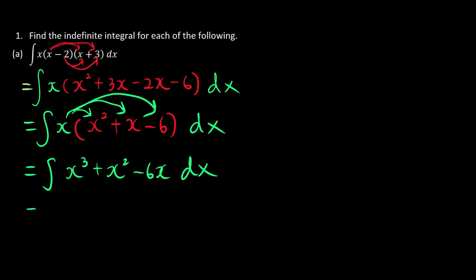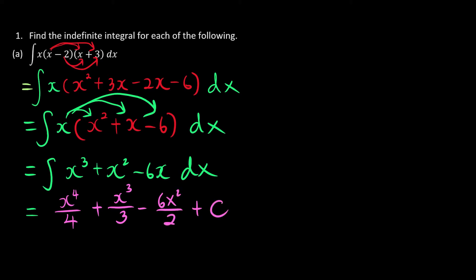Now we can start our integration. The power increases by 1, divided by the new power — plus same thing, 2 plus 1 is 3, divided by 3 — minus 1 plus 1 is 2. And since this is indefinite, we're going to plus c.